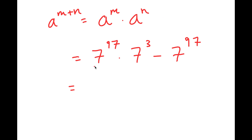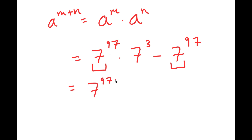From here, notice how both of my terms have 7 to the power of 97 in them. So I can simply factor out 7 to the power of 97, and I get 7 to the power of 97 times 7 to the power of 3 minus 1.